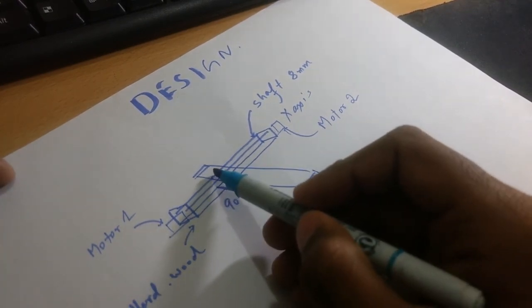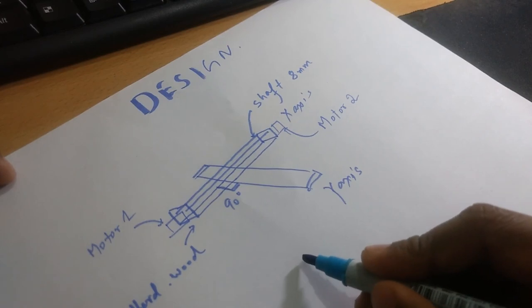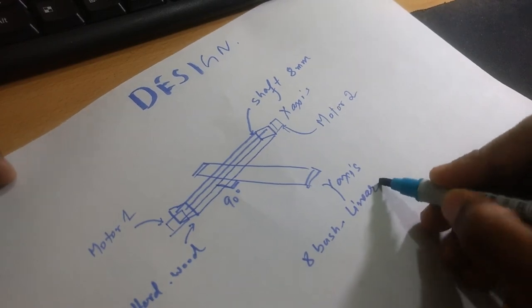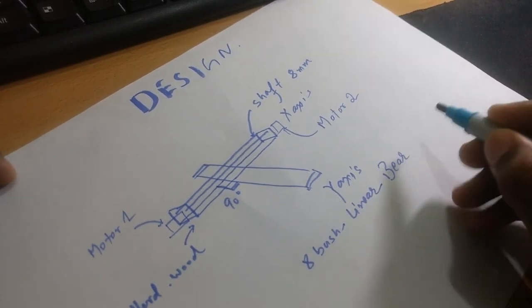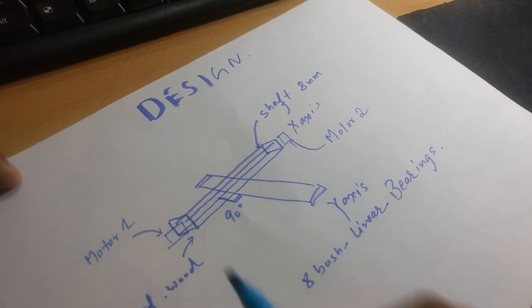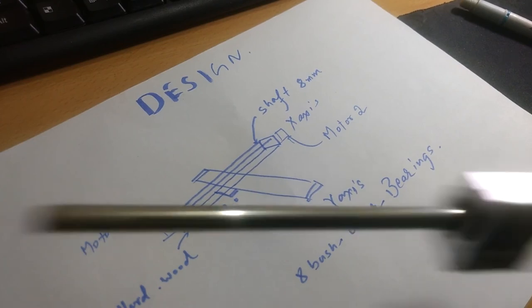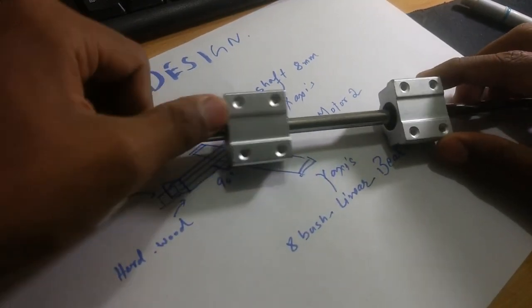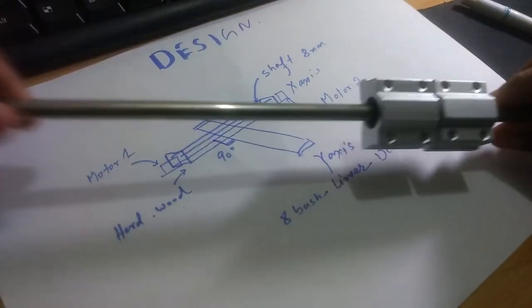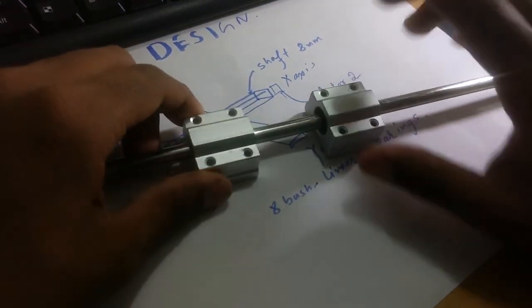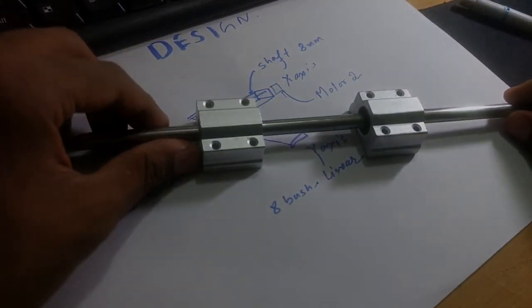So I will be using here a total of 8 bush linear bearings. I will show you the bush bearing. So these are the bush bearings that will be connected with the rod. I will be using a total of 8 of them to work with.